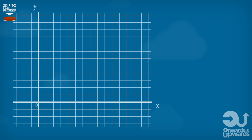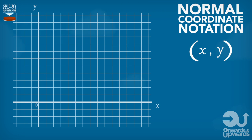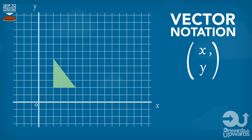Now column vectors tell us exactly how the shape needs to move. It's exactly like normal coordinates where we have an x coordinate and a y coordinate. The top number is the x coordinate and the bottom number is the y coordinate.